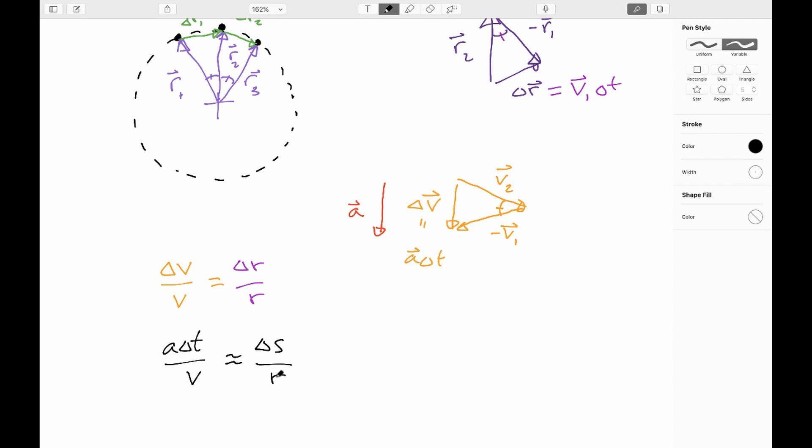And this is actually legit because as the angles get smaller and smaller, the difference between the arc length and the radius gets smaller. You can show rigorously that as the angle approaches zero, the difference goes away. And since we're going to be letting our times approach zero, eventually this delta S will approach delta R. So this is legit.